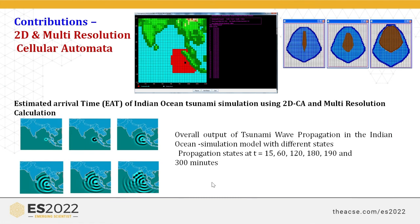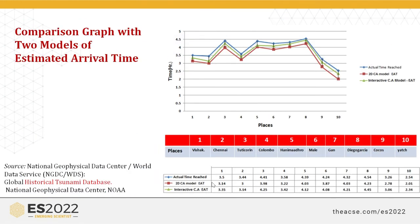The contributions in the cellular automata model include the 2D cellular automata model and the multi-resolution cellular automata model. The estimated arrival time of the Indian version tsunami using two models was obtained with outputs at different states: t = 15, 16, 120, 180, 190, and 300 minutes. Based on the Indian version and historical data from the National Geographic Data Center, the comparison graph shows that the interactive cellular automata estimated arrival time is approximately equal to the actual tsunami arrival time of the 26th December 2004 tsunami, with accurate results for locations such as Vysok, Chennai, Tuticorin, Colombo, and others.